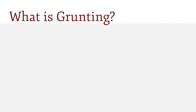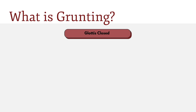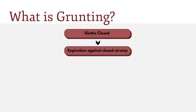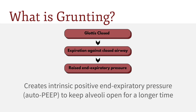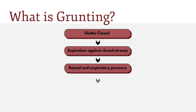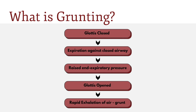Let's look at how grunting occurs. First, the glottis is closed. Then, expiration against the closed airway causes an increased positive end expiratory pressure, which is known as auto-PEEP. This allows the child to keep its alveoli open for a longer time and prevent the lungs from collapsing. Then the glottis is opened and the rapid exhalation of air makes the grunt sound.